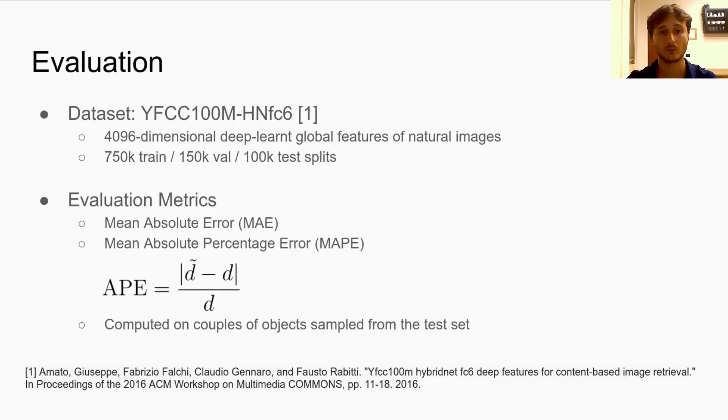For the evaluation of our model, we perform experiments with the YFCC 100 million image dataset. In particular, we used a subset of deep-learned global features extracted from 1 million natural images taken from this dataset. We used the first 750k for training, another 150k for the validation and model selection, and then the last 100k for testing and reporting metrics.